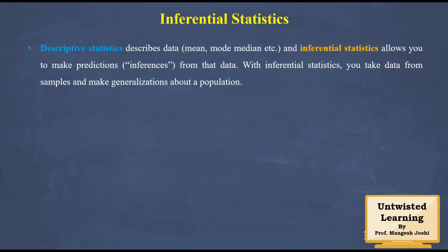Descriptive statistics describes the data — it may give you mean, mode, median, standard deviation, and other measures. Whereas inferential statistics allows you to make predictions, as the name indicates, inference from the data. With inferential statistics, you take data from samples and make generalizations about the population.